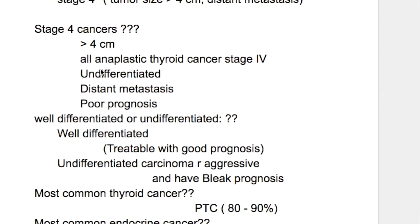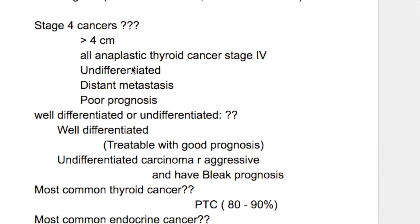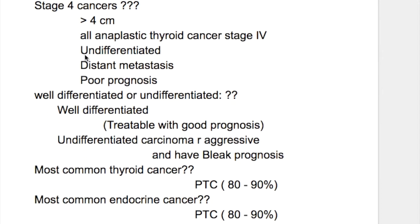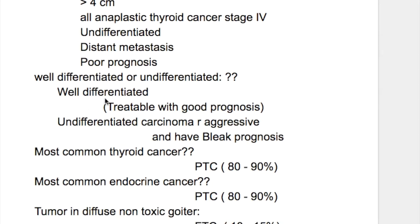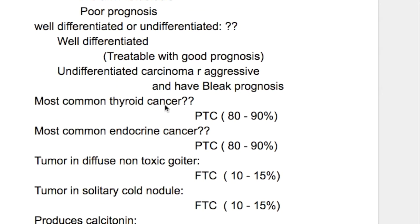Features of stage 4 cancers: tumors are more than 4 cm. All anaplastic thyroid cancers are stage 4. All undifferentiated cancers are stage 4. All cancers with distant metastasis are stage 4, and they have poor prognosis. Well-differentiated tumors are treatable with good prognosis, while undifferentiated carcinomas are aggressive and have a bleak prognosis.